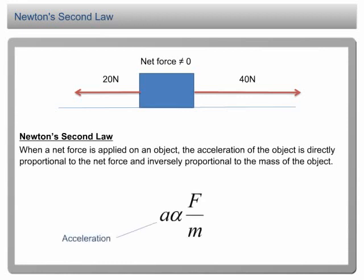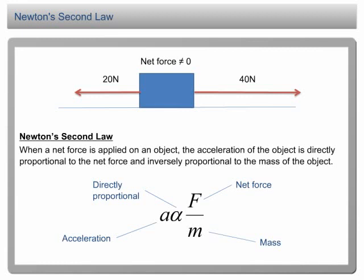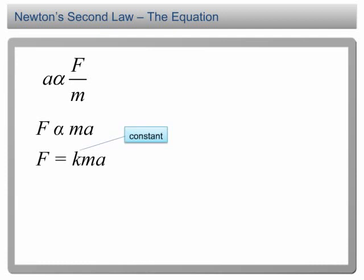In mathematical expression, we write this as a is directly proportional to F over m. We can also write this as F is directly proportional to ma. To make this into an equation, we multiply the variable by a constant k, and hence we get F equals kma.